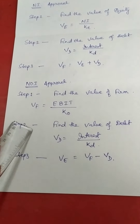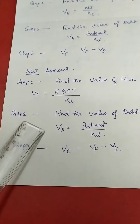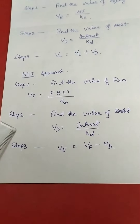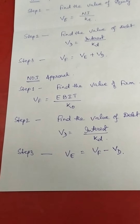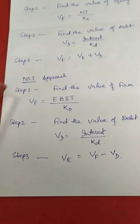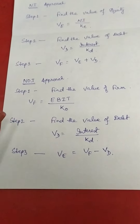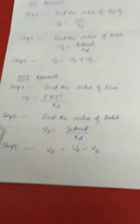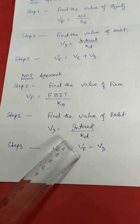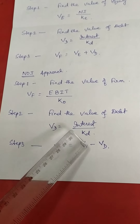Under the NOI approach, the value of the firm remains constant and independent of its capital structure. So step 1 is to find the value of the firm: VF = EBIT / KO, where NOI equals earning before interest and tax, capitalized by KO. Step 2 is to find the value of debt. The value of equity is the residual value — deducting the value of debt from the value of the firm: VE = VF minus VD.